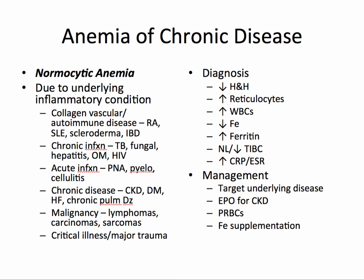Anemia of chronic disease is a normocytic anemia due to an underlying inflammatory condition — a very common disease in the acute care setting. In the labs, you'll notice a decreased hemoglobin and hematocrit, an elevated reticulocyte count, likely elevated white blood cells, a decreased iron, an increased ferritin, and a decreased TIBC — this is a little different from iron deficiency anemia. Because of the inflammation, you have a reduced transport of iron and therefore a lower TIBC. You'll also note an elevated C-reactive protein or erythrocyte sedimentation rate, which are general inflammatory markers.